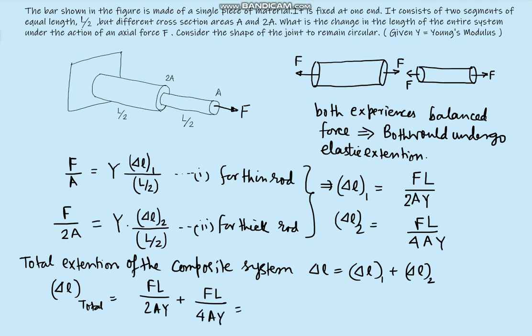Now this 1/2 + 1/4 comes out to be 3/4, and this is FL divided by AY. So I hope you understand this. The total extension of the composite rod is 3FL/(4AY). Thank you.